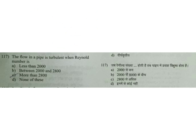The flow in a pipe is turbulent when Reynolds number is: A. less than 2000, B. between 2000 and 2800, C. more than 2800, D. none of these. C is the answer. For turbulent flow Re must be more than 2800, and for laminar flow it should be less than 2000. Between 2000 and 2800 is the transition zone between laminar and turbulent flow.